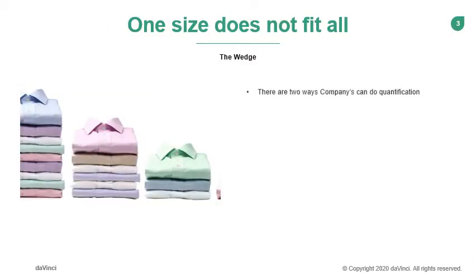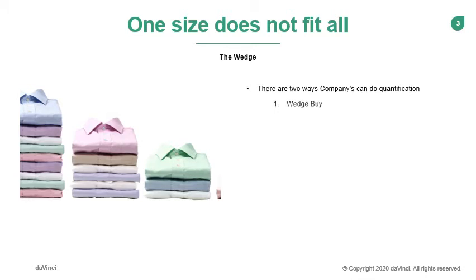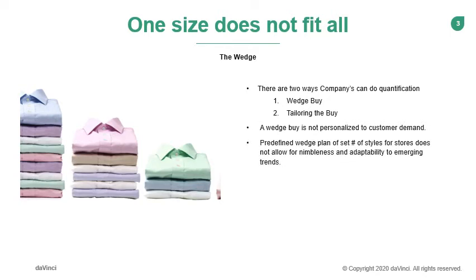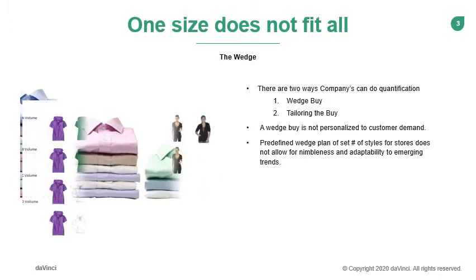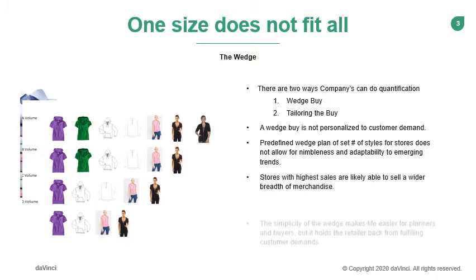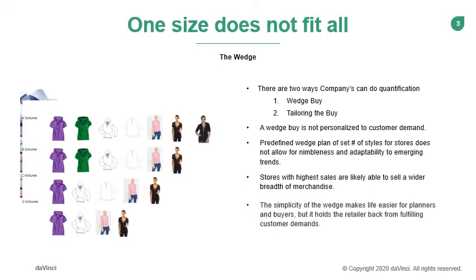As the buying team begins the process to quantify their buys, they would do this by using either a predefined wedge or they would tailor their buy to meet customer demands. The wedge has been used for years. Stores would be clustered by total sales volume, allowing for faster buying decisions. An all-store buy is defined by one quantity, and a select-store buy is quite often half the amount of the all-store buy quantity with very little deviation. This holds retailers back from fulfilling customer demand quickly. The inherent constraints limit buyers to a predetermined set of styles, ignoring the urgent need to be adaptive to trends.